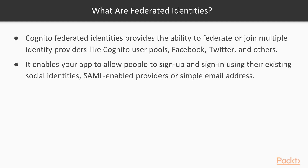What are federated identities? Cognito federated identities provides the ability to federate or join multiple identity providers like Cognito user pools, Facebook, Twitter, and others. This makes it much easier for your users to start using your app. It enables your app to allow people to sign-up and sign-in using their existing social identities and SAML-enabled providers or simple email address. The easier it is for people to sign-up for your app, the more people will do it.